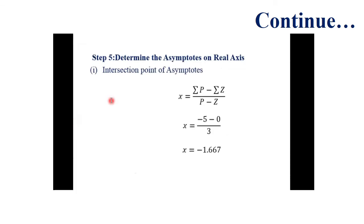Step 5 — determine the asymptotes on the real axis. The intersection point of asymptotes is found using the formula involving the summation of poles and zeros. With 3 poles and 0 zeros, the summation of poles equals -5 and summation of zeros equals 0, so X = (-5 - 0)/(3 - 0) = -1.667. The intersection point of asymptotes with the real axis equals -1.667.